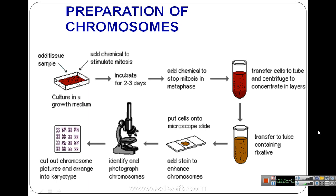After photographing, the chromosome images are cut out and arranged into a karyotype. Software is used to arrange the chromosomes — for example, we know which chromosome corresponds to chromosome number one, and we place each one in the correct position. The final arranged photograph does not come directly from the slide; we arrange them using software.